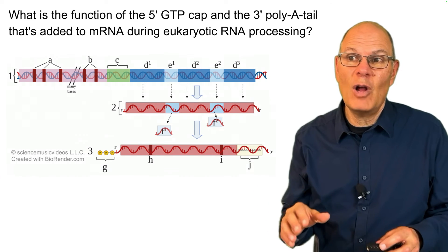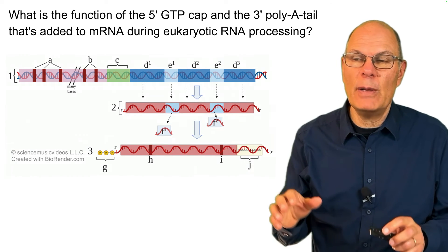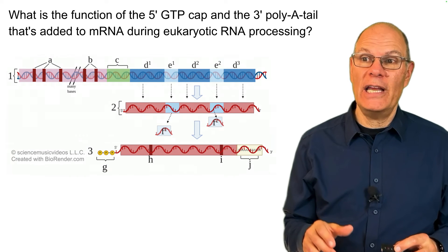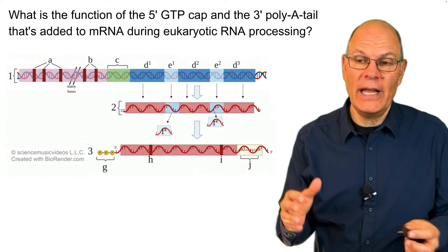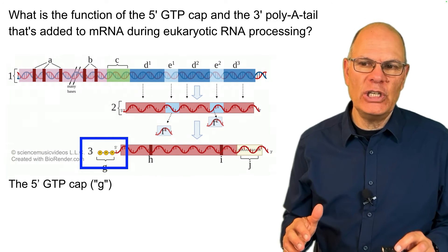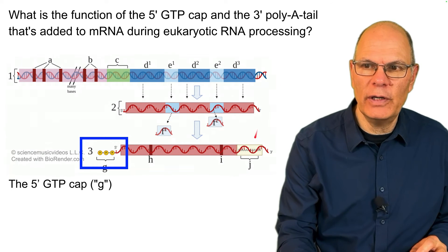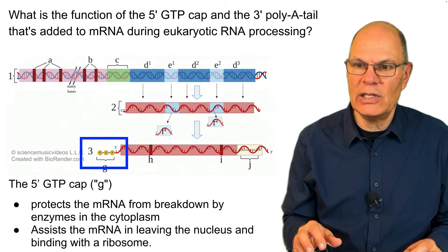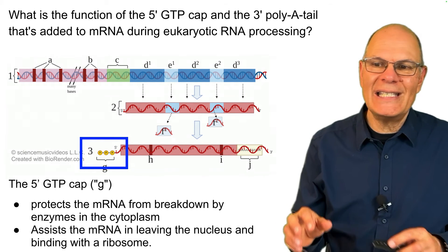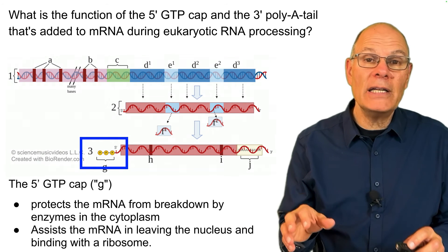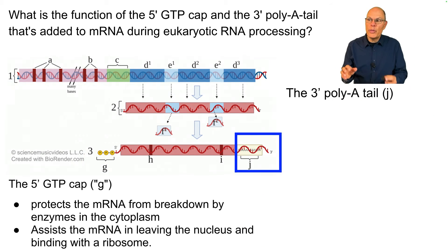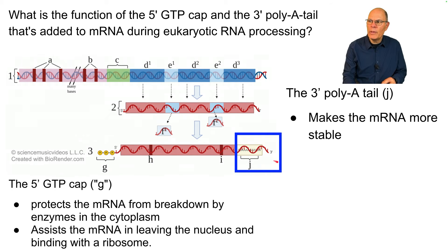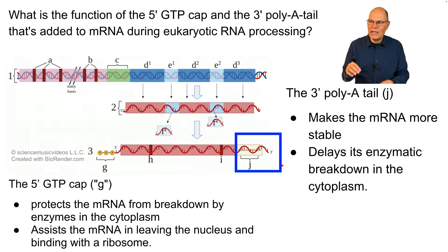What is the function of the five-prime GTP cap and the three-prime poly-A tail added to mRNA during eukaryotic RNA processing? The five-prime GTP cap (shown at G) protects the mRNA from breakdown by enzymes in the cytoplasm and assists the mRNA in leaving the nucleus and binding with a ribosome. The three-prime poly-A tail makes the mRNA more stable and delays its enzymatic breakdown by enzymes in the cytoplasm.